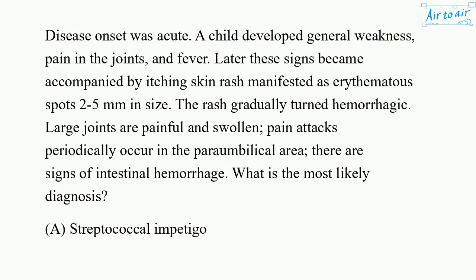Disease onset was acute. A child developed general weakness, pain in the joints, and fever. Later, these signs became accompanied by an itching skin rash manifested as erythematous spots 2-5 millimeters in size.